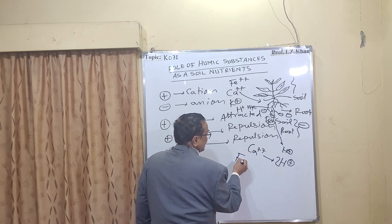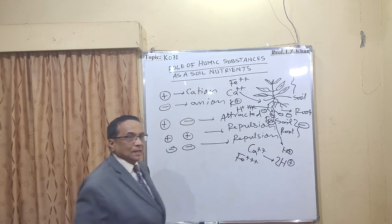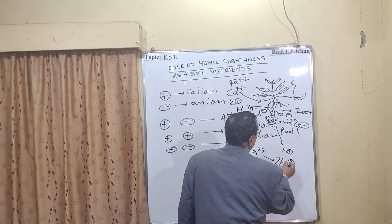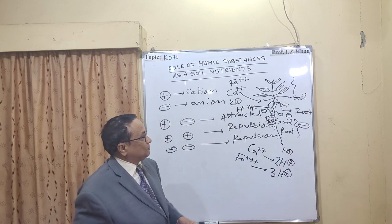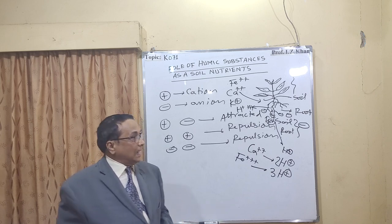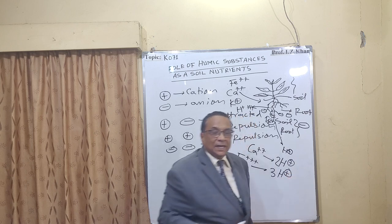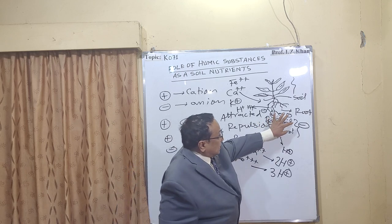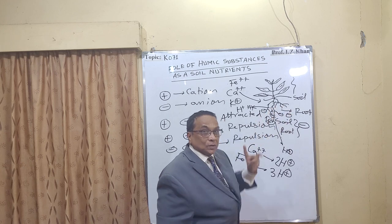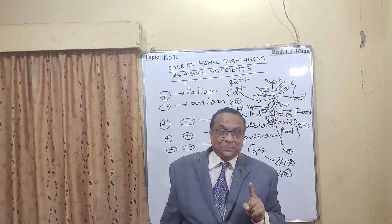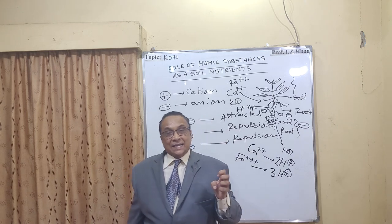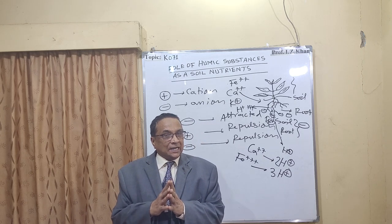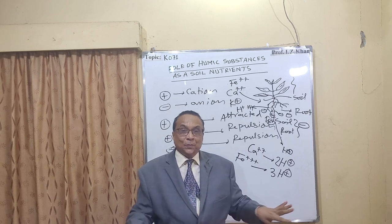If the plant is taking ferric ion, Fe³+, in that condition it is going to release three H+ from the plant. I have already told you that soil and root are carriers of negatively charged particles. If the density of negatively charged particles around the root is more, then it will be difficult for positive charge to be absorbed by the plant. So in that case, we have to apply more nutrients so that the density of negatively charged particles around the root in the soil is less.